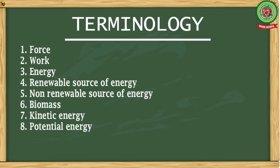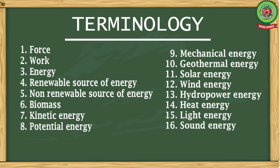The key terminology of this chapter includes: force, work, energy, renewable source of energy, non-renewable source of energy, biomass, kinetic energy, potential energy, mechanical energy, geothermal energy, solar energy, wind energy, hydropower energy, heat energy, light energy, and sound energy. Now students, open your book at page 105.